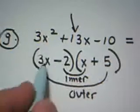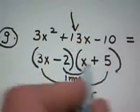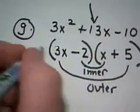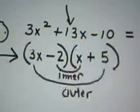So my final answer, 3x minus 2 is one factor, x plus 5 is the other. And we're done. Okay, thanks.